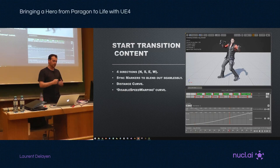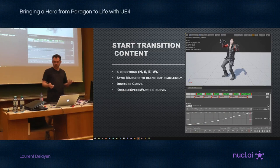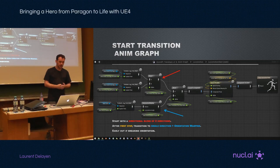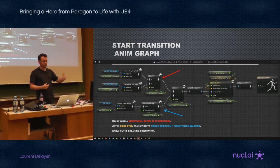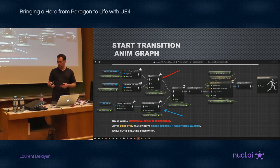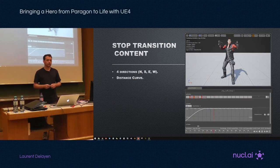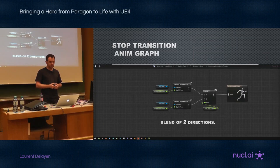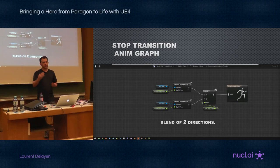Looking at the graph, in red we have a blend of two directions for the start — if we go forward 45 degrees to the left, we blend forward and left for the first step, then transition to a single direction with orientation warping for the rest of the transition, then speed warping, and that's the final pose. The stop transition has four directions, a distance curve that starts negative and plateaus at zero. We're going to a marker and once we reach it it's just a subtle animation. The graph for the stop just blends two directions; we don't have enough frames to do any speed warping in this case.